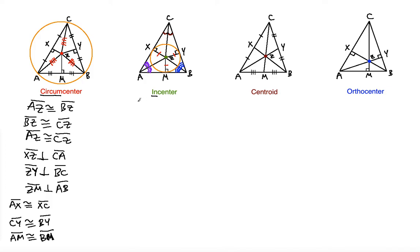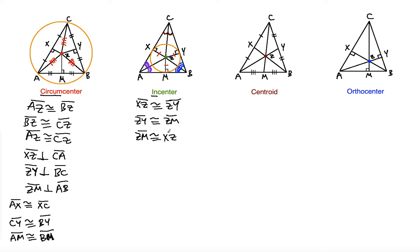As a result, XZ is congruent to ZY, because these are radii of the inscribed circle. ZY is congruent to ZM, and ZM is congruent to ZX. These are the radius properties you should know.